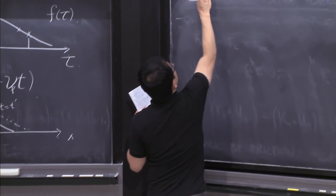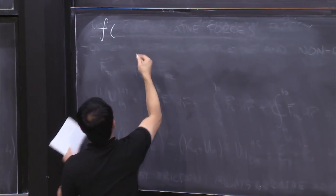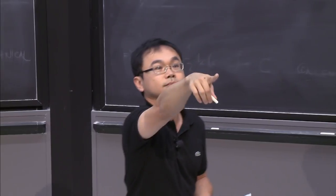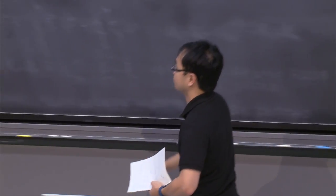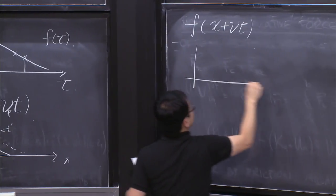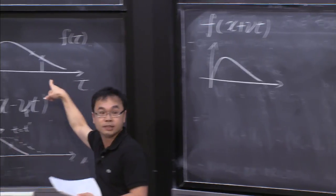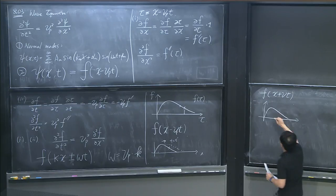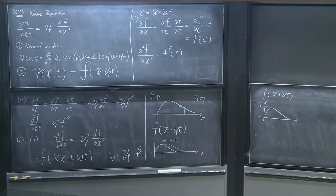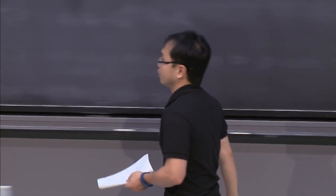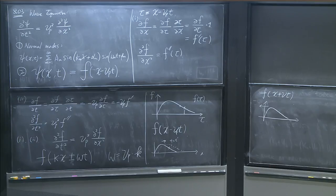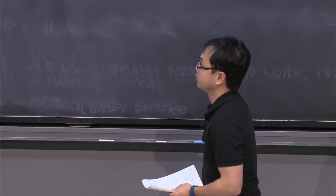If instead I write f(x + vp·t), the shape moves in the negative x direction. The sign in the argument determines the direction of propagation: minus means rightward, plus means leftward.